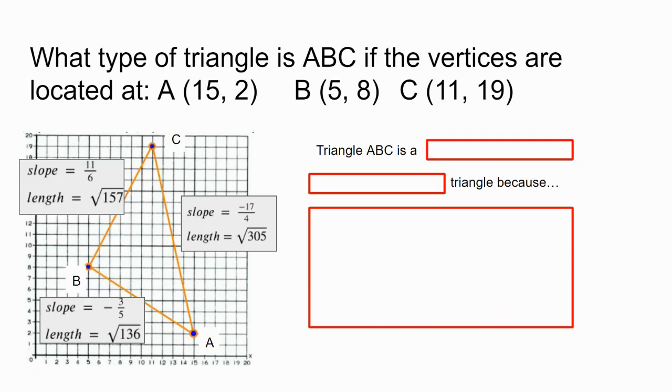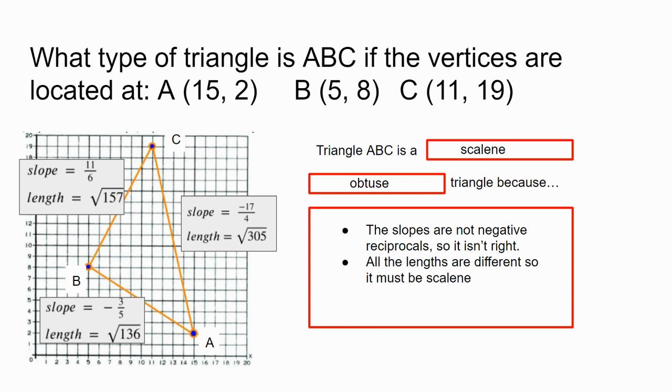Putting all this together, we see we have enough information to solve the problem. We can now say definitively that this triangle is scalene and obtuse. How do we know this? We know this because all the slopes are not negative reciprocals. So it isn't a right triangle. We also see that the lengths of each side are different. So it must be scalene. And we know also that in a right triangle, the square of the longest side is always equal to the sum of the squares of the other two sides. But in this case, the square of the longest side is greater than that sum. In effect, it's too large. Meaning the opposite angle must be greater than 90 degrees. Therefore, this triangle is scalene and obtuse.